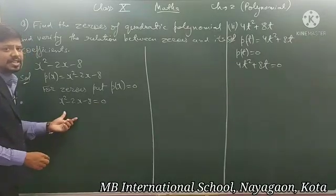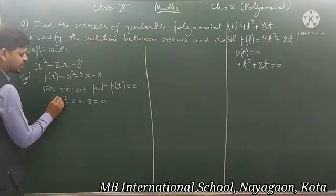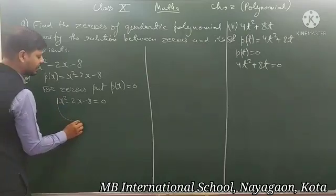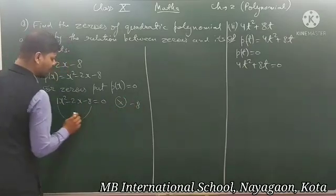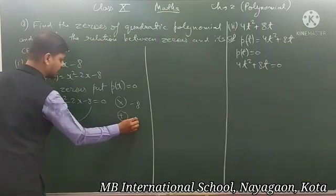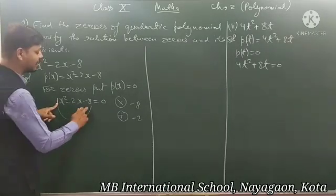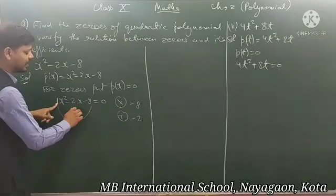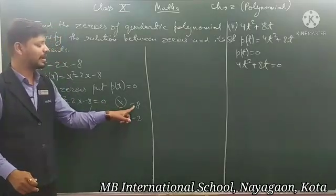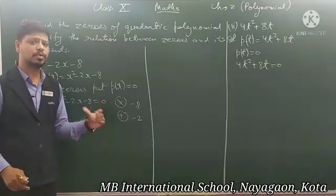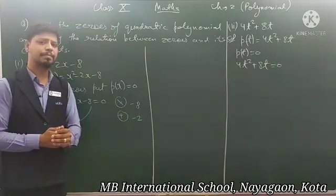Now we will solve this by middle term splitting and factorization. The coefficient of x² is 1. We multiply this with the last term: 1 × (-8) = -8. And the middle term when added should give -2. So we need two numbers whose product is -8 and whose sum is -2.